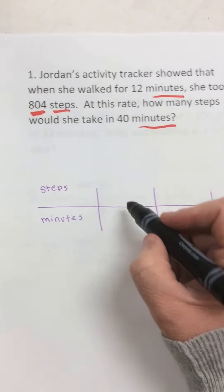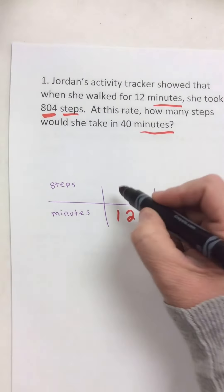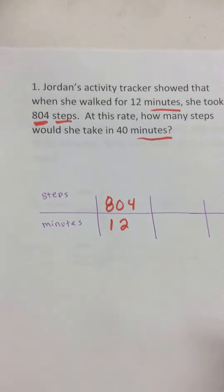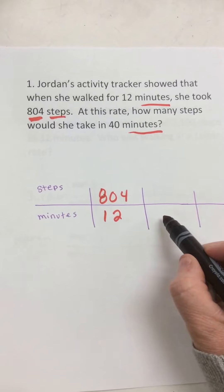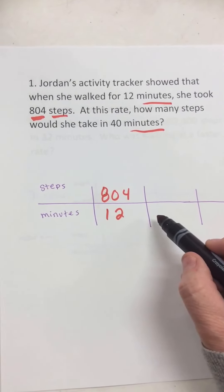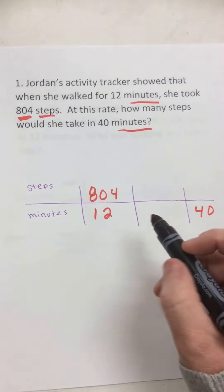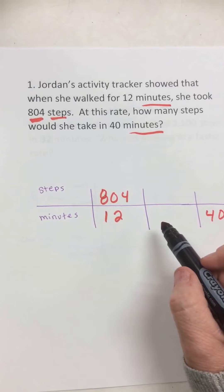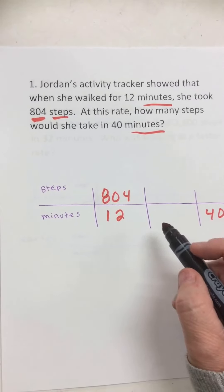So this says in 12 minutes she can take 804 steps, but it's asking how many steps in 40 minutes. If I put 40 here for minutes, I know that 12 does not go into 40 — 12 goes into 36 and into 48. So I'm going to go to 40. This is a rate problem. What I want to do is find how many steps she could take in one minute.